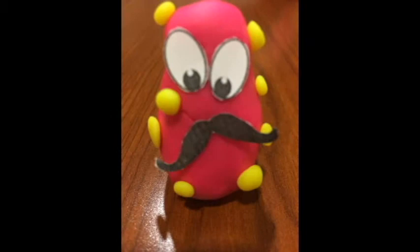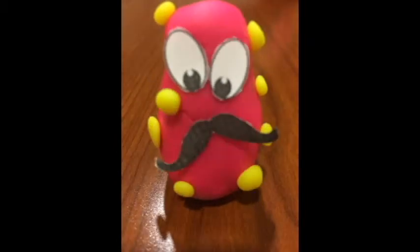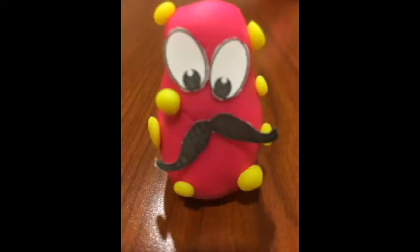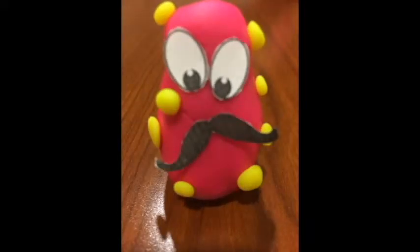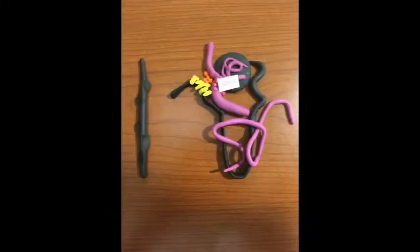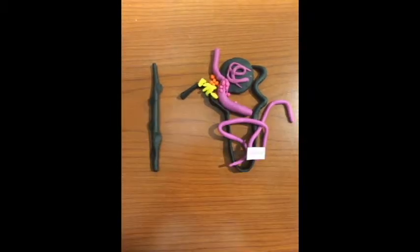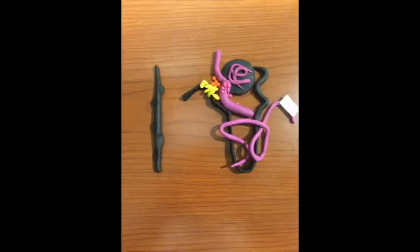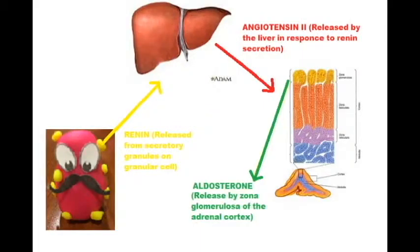That's right, Martha. Let me tell you how it works. So my secretory granules contain renin. Renin is an enzyme, which means that it acts as a catalyst for a specific biochemical reaction. My renin release goes on to result in the formation of angiotensin 2, which is a hormone released by the liver. The presence of angiotensin 2 then prompts the zona glomerulosa of the adrenal cortex to secrete aldosterone, a steroid hormone.